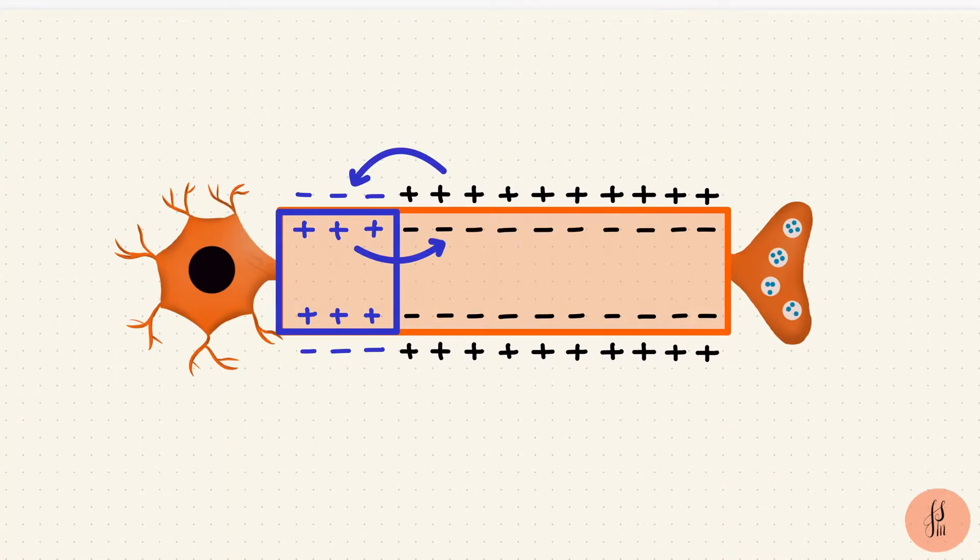The propagation happens with these local current circuits. Positive charge from the membrane ahead, carried by those sodium ions, flows into the active zone. And from there, positive charge flows towards the adjacent zone, which is inactive. The flow is because of the charge imbalance. And this current flow, it will be depolarizing the next portion of the membrane.